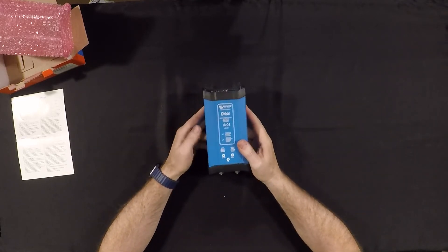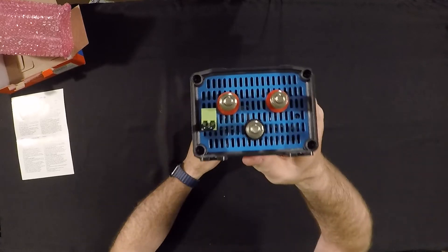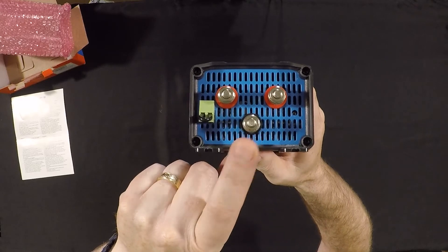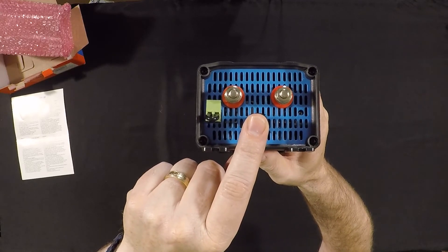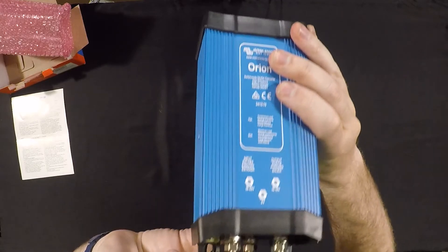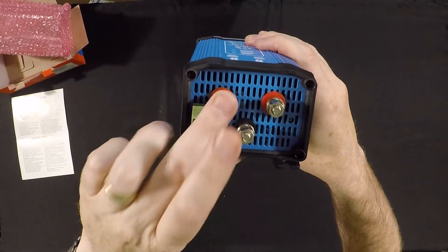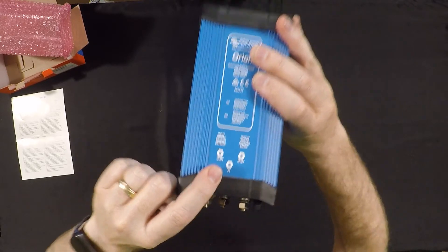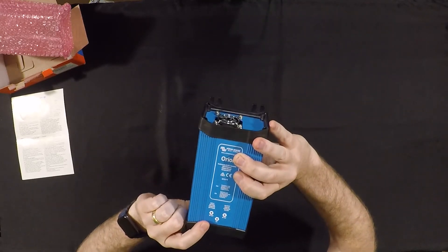And if you look at the actual connections here, you have three connections. You have a common ground that is common between both your 12 and your 24 volt side. And then you have on this side right here, this one is the 24 volt side because it tells you the numbers there. You have a range of input of anywhere from 18 to 32 volts.